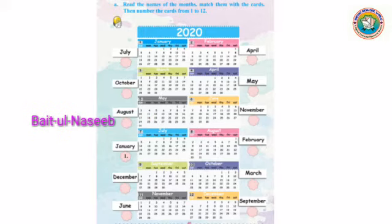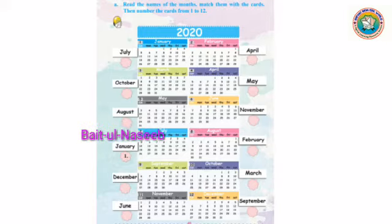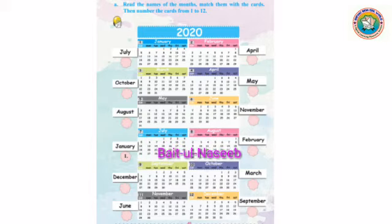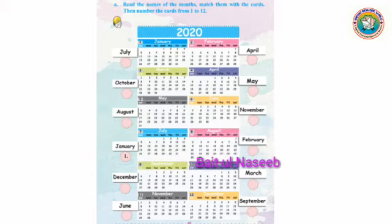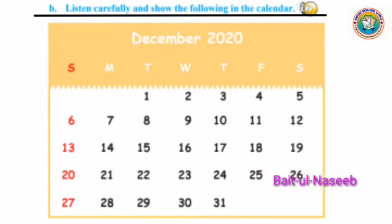उनके बाजू में, उनके लेफ्ट साइड और राइट साइड, यहाँ पर कुछ कार्ड्स बने हुए हैं. उन कार्ड्स से आपको महीने वाले कैलेंडर को मैच करना है. समझ गए ना बेटा, यह है मैच दि पेयर. मुझे उम्मीद है आप यहाँ मैच कर लोगे. अब question number भी दिया हुआ है बेटा इधर,